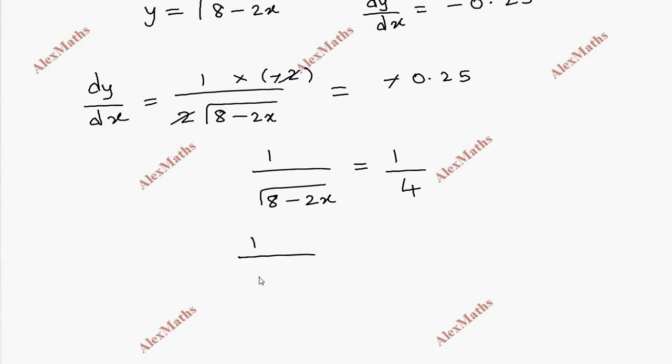Now square both sides: 1 by (8 minus 2x) equals 1 by 16. Cross multiply: 16 equals... so 8 minus 2x equals 16.